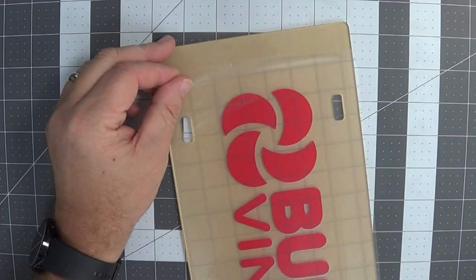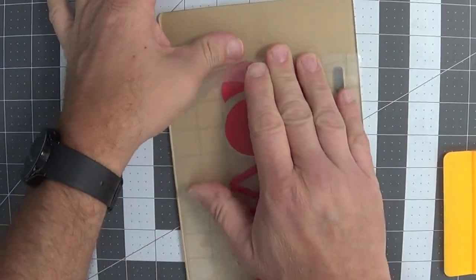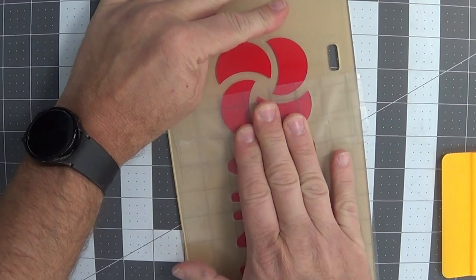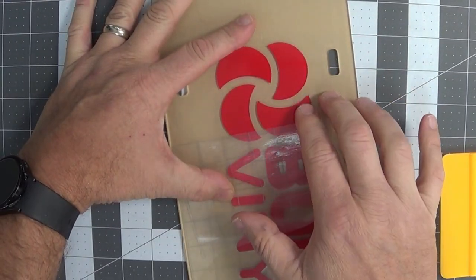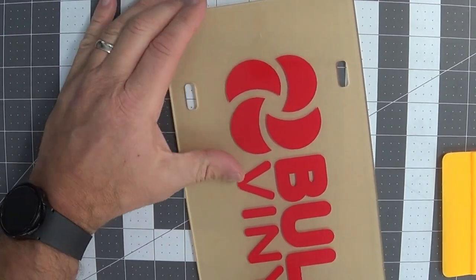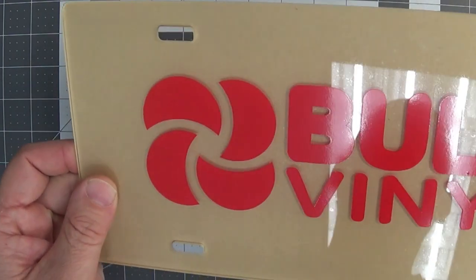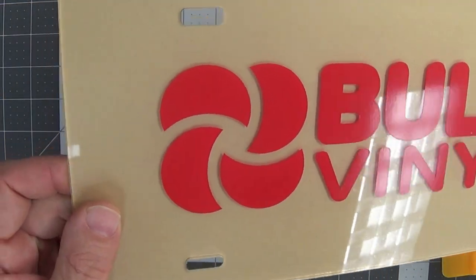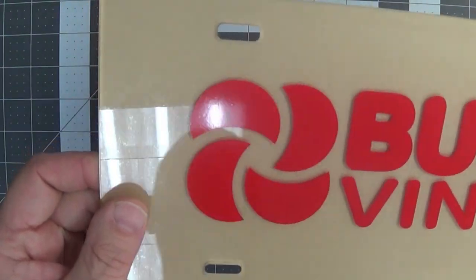And then when I remove the transfer tape, I'm going to remove it back against itself and roll it backwards at a 180 degree angle like this, because if I pull out I have the potential of pulling the vinyl away from the surface and creating an air bubble. So if I do that and now if you look at the glare, you will see there are absolutely zero air bubbles under that vinyl. It looks wonderful.